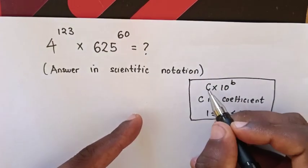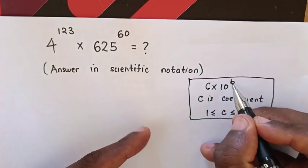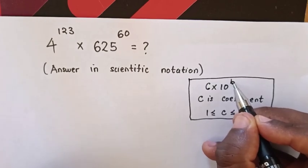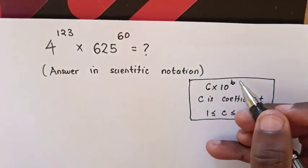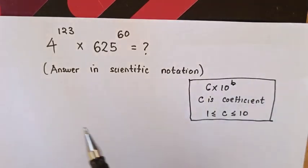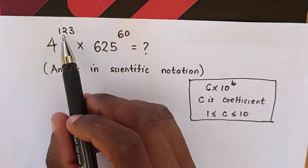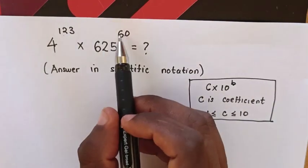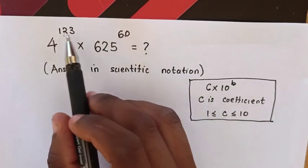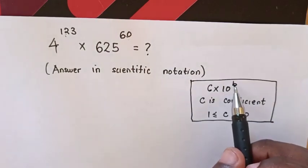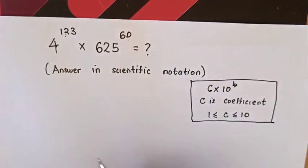Now, from C times 10 power of B, B should be the power of any number. From our problem, we are going to make these powers the same as the power of B.